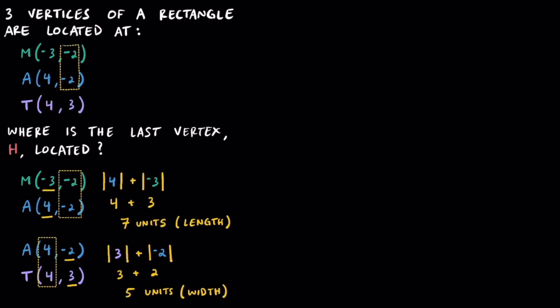Given that these negative 2s match for the y-coordinates and positive 4s match for the x-coordinates, this leftover x-coordinate of negative 3 and the leftover y-coordinate of positive 3 are actually the coordinates for point H. To complete this rectangle, the last coordinate H is located at negative 3 comma positive 3. That's the last vertex.